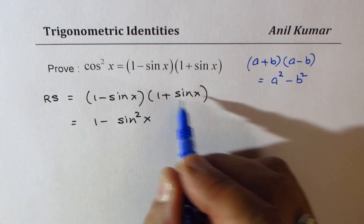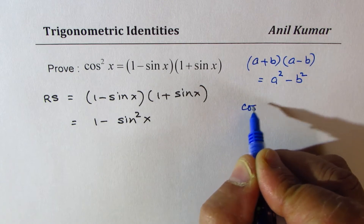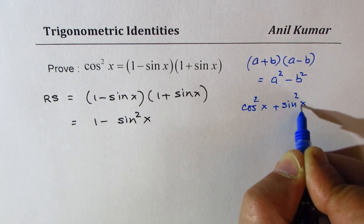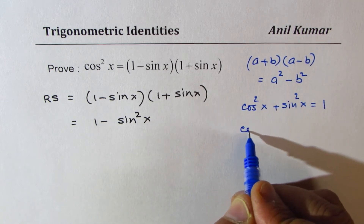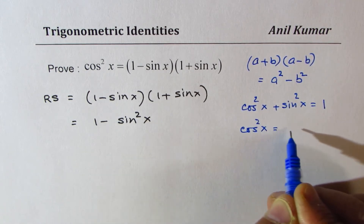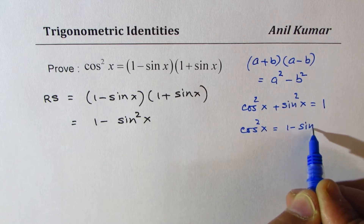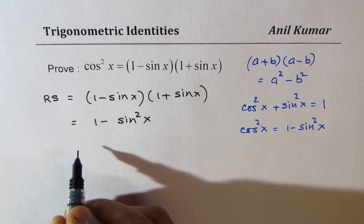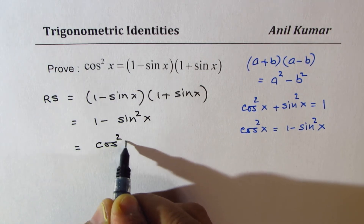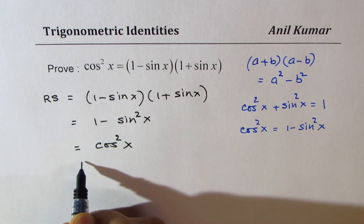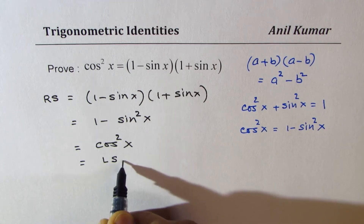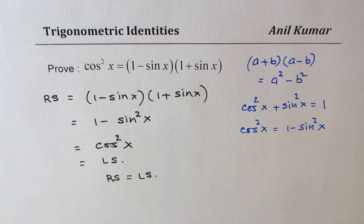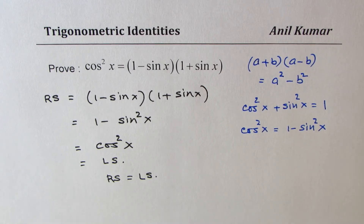So we could write this as 1 minus sin square x. Now you know the trigonometric identity cos square x plus sin square x equals 1, and so we could write cos square x as 1 minus sin square x. So this 1 minus sin square x is indeed equal to cos square x, which in our case is also equal to the left side. So we have shown that right side equals left side and we have proven the identity.